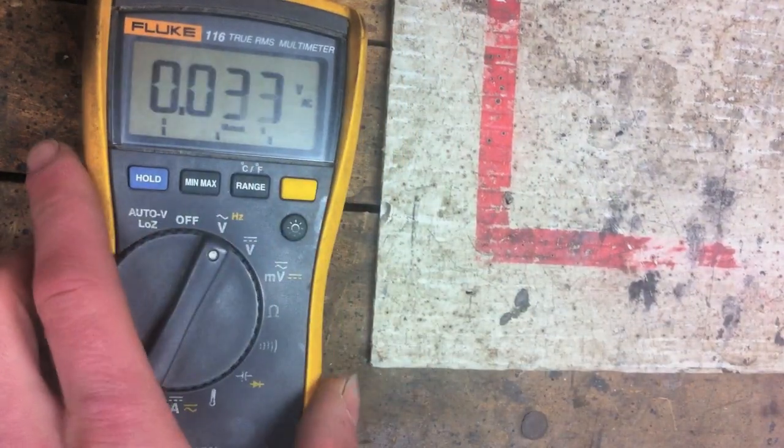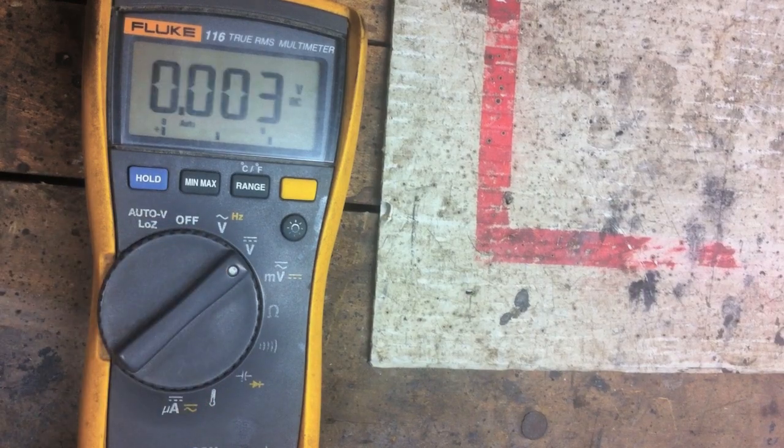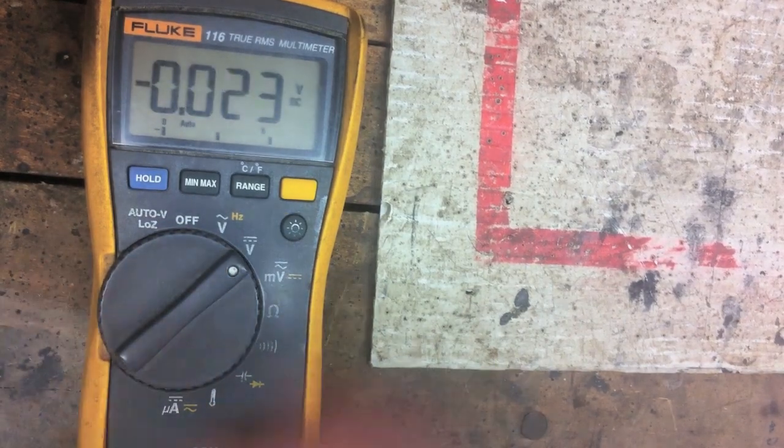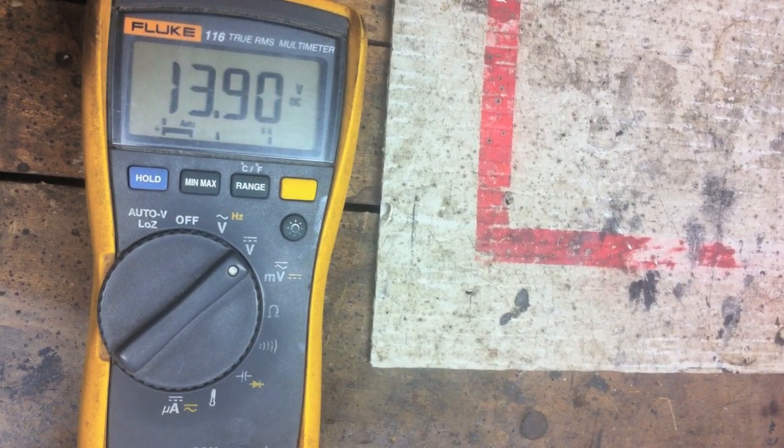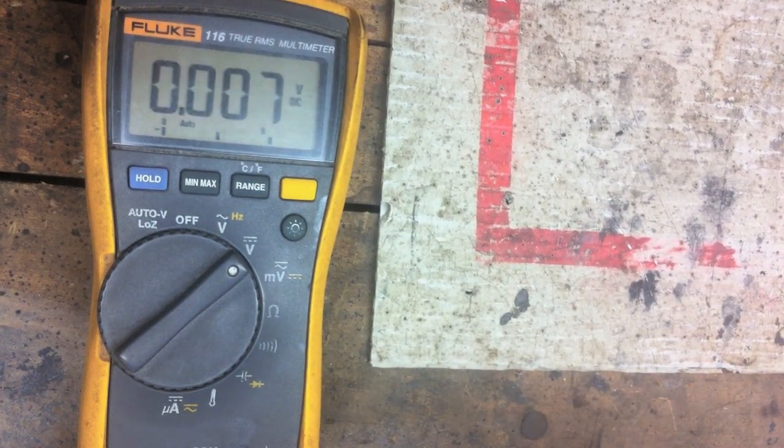So we'll switch that back to volts. Volts DC. I got a battery here I can measure. 13.9 volts DC. Again the bar graph.